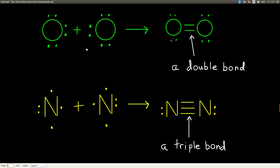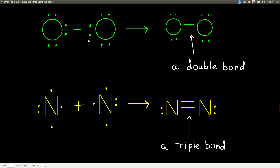If we bring 2 oxygen atoms together, each oxygen needs 2 more valence electrons. So each oxygen shares 2 of its valence electrons — this oxygen shares two, and this oxygen shares two — giving us a double covalent bond. Each oxygen now sees 2, 4, 6, 8 valence electrons (remember, each line equals 2 electrons). Both atoms have the octet rule satisfied, and we have what's called a double bond.